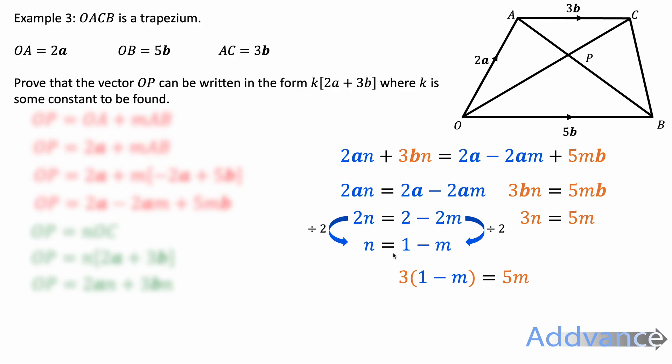And we can substitute our expression for n, 1 minus m, into this expression. So we're substituting the blue expression into the orange expression. We expand those brackets and we get this. We add 3m to both sides. We get 3 equals 8m. And we divide by 8.